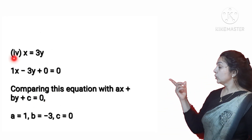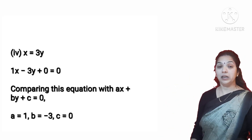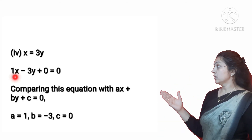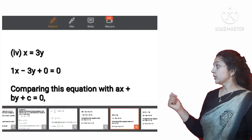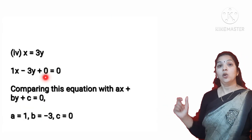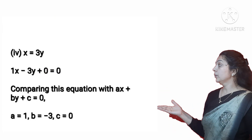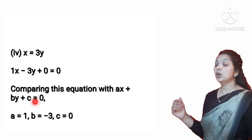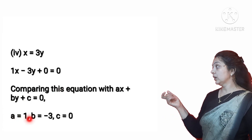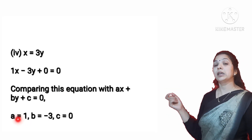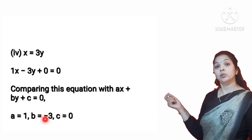The fourth part gives the equation X = 3Y. Taking 3Y to the left hand side, it becomes X minus 3Y = 0. The constant term is missing, so we write 0 for C. Comparing with AX + BY + C = 0, since no coefficient is written with X we take it as 1, so A = 1, B = minus 3, and C = 0.